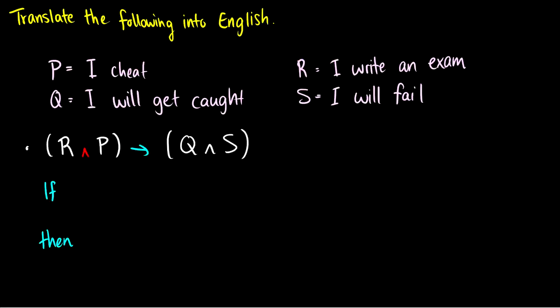So this is and with the conjunction. So what is R? Well, R is if I write an exam. And then we have our connective and. And now we have P. So what is P? Well, P is I cheat. So if I write an exam and I cheat, then with the arrow Q. So I will get caught. Then this and, which I'll just rewrite in orange, is also and. Then what is S? S is I will fail.